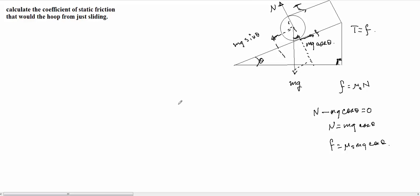So then we can write our components here. mg sin theta minus these two forces, T and frictional force. But those are equal, so that's going to be twice the frictional force. And everything has to be set equal to zero.